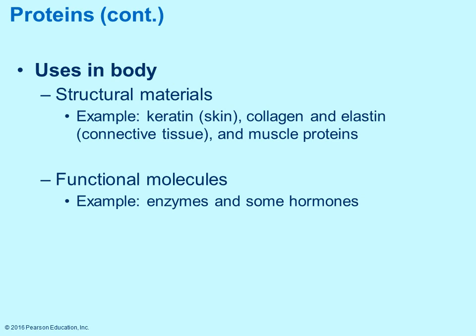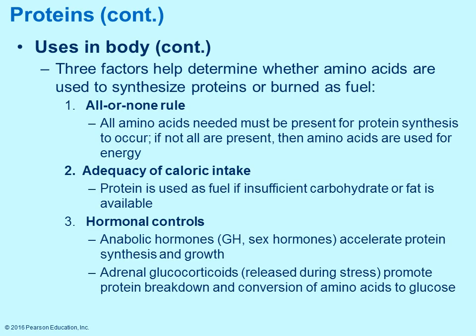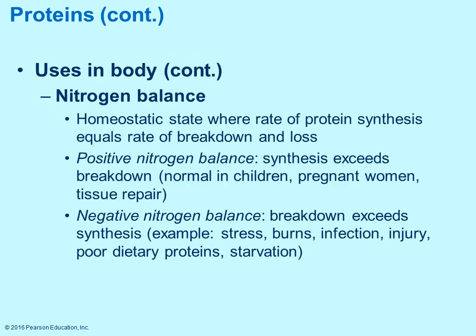There are different uses for proteins in the body — structural and functional. Structurally, proteins are used as components in the skin, muscle proteins, and connective tissue. Functionally, some hormones are protein-based, and enzymes necessary for chemical reactions are all proteins. Different factors determine whether amino acids will be used to synthesize new proteins or burned as fuel, including hormonal controls and whether sufficient carbohydrates and fats are available in the diet.